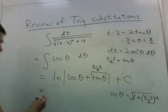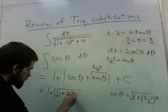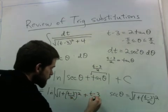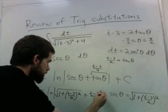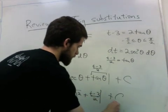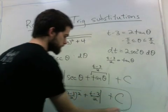So the final answer is the natural log of this nasty thing plus t minus 3 over 2 absolute value plus c.